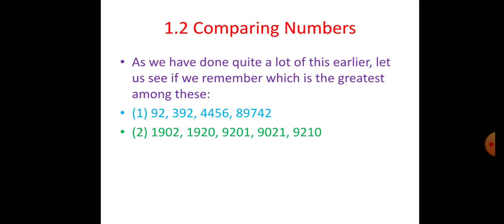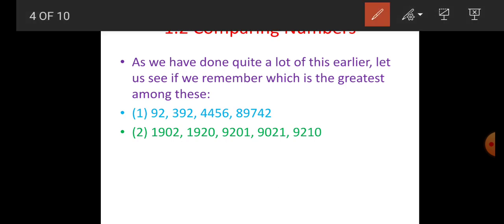Comparing Numbers. We have done quite a lot of this earlier. Let us see if we remember which is the greatest among these: 92, 392, 4,456, 89,742. Among these, 89,742 is greatest. Why only this is greatest? Because 89,742 is a 5-digit number.